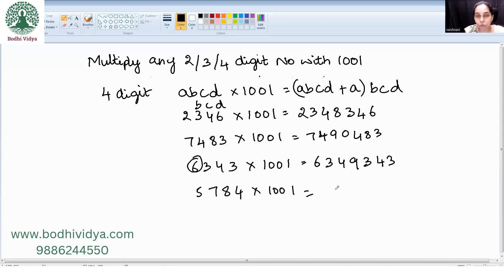Now 5784 into 1001. 5784 plus 5 is 5789, then 784. We are just adding the first digit A to the last digit. The answer is 5789784.